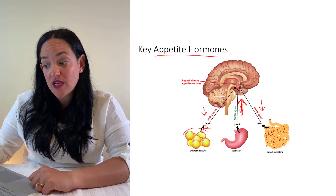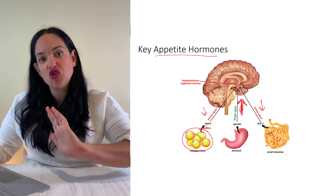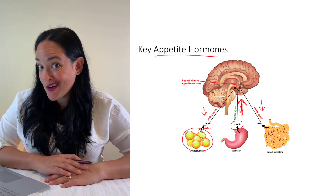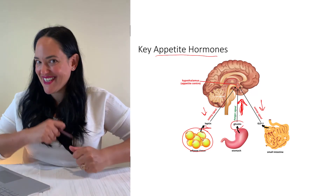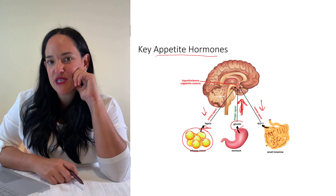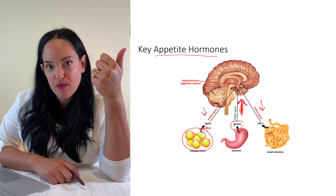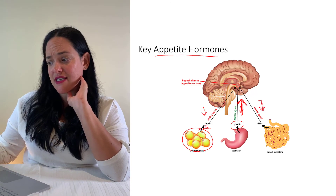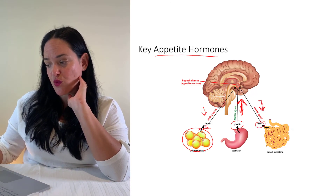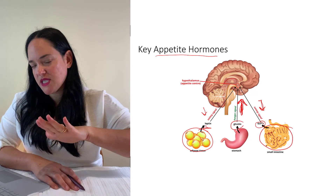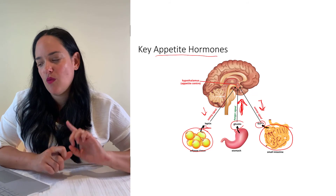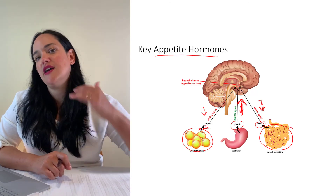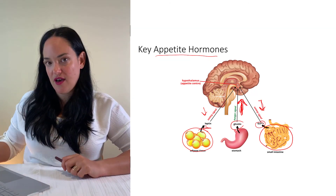Ghrelin, often known as the hunger hormone, pushes down the accelerator to drive eating. People typically have higher ghrelin levels when they don't sleep properly, and ghrelin levels often go up right before a meal. Another satiety signal is GLP-1, secreted by the small intestine, which is again a stop signal on the appetite center. Notably, one of the leading obesity drugs actually promotes GLP-1 activity in order to put that stop signal on the appetite center.